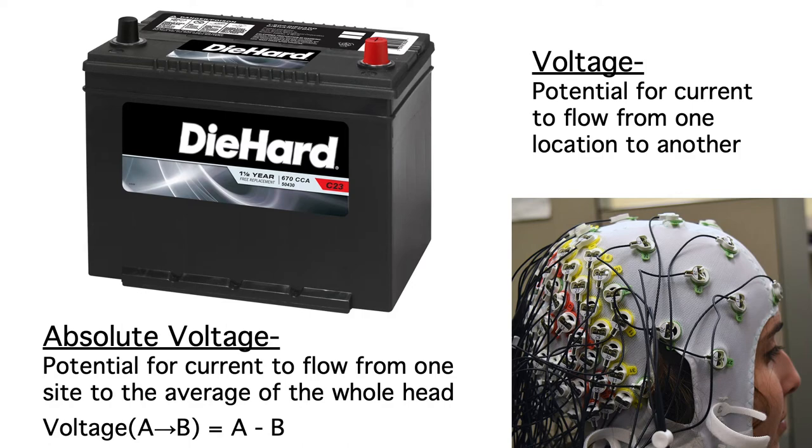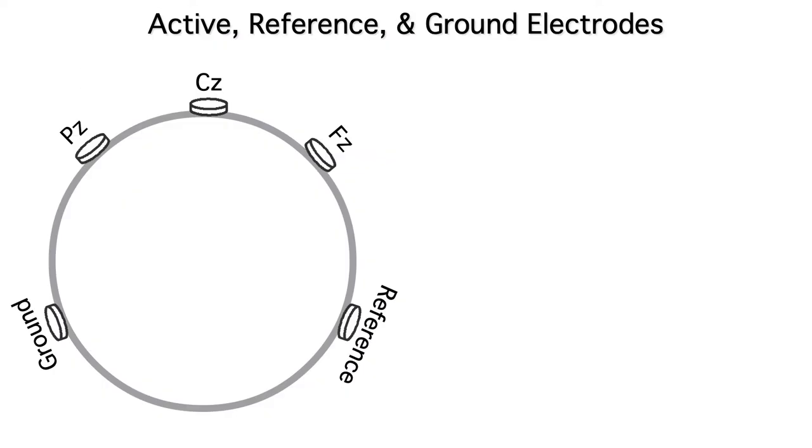Now let's talk about how the EEG is actually recorded. To get one channel of EEG, you actually need three electrodes: active, reference, and ground.